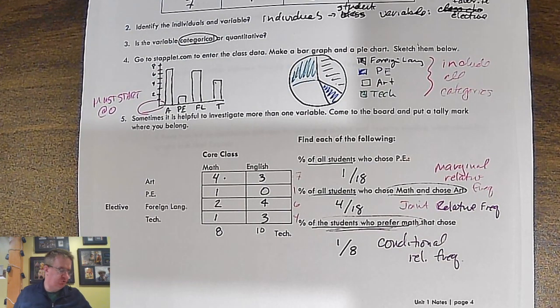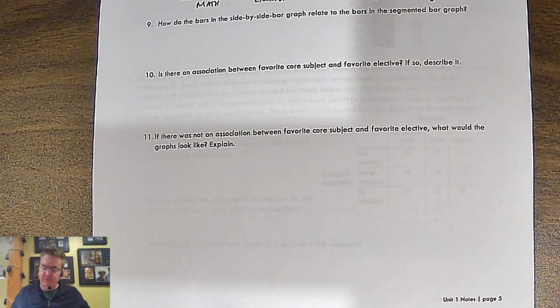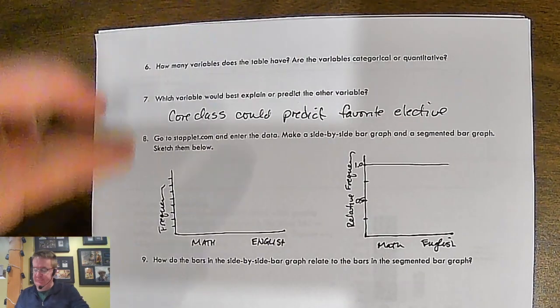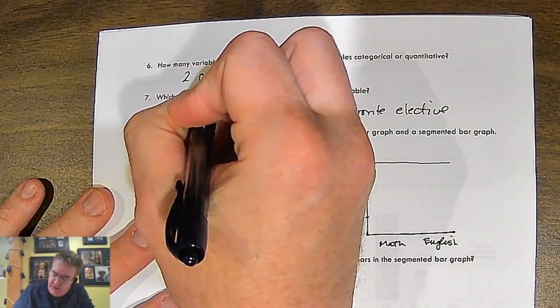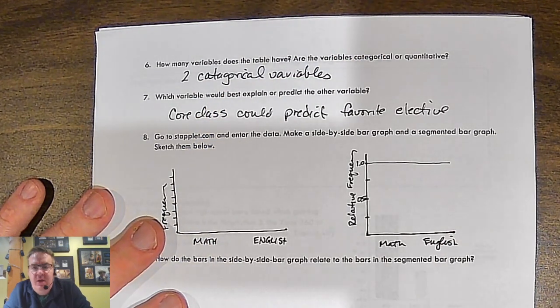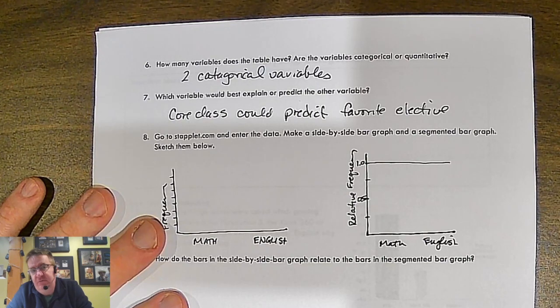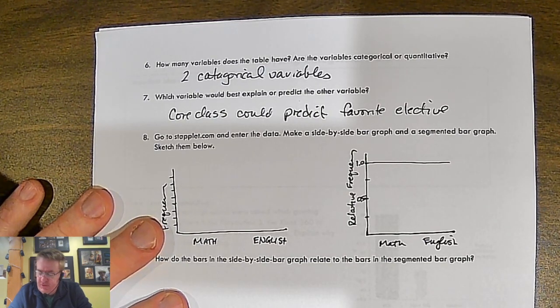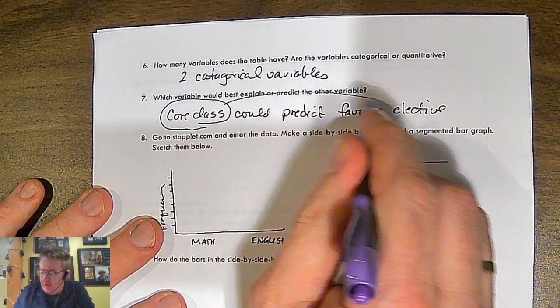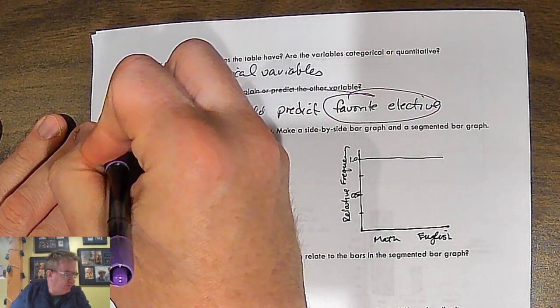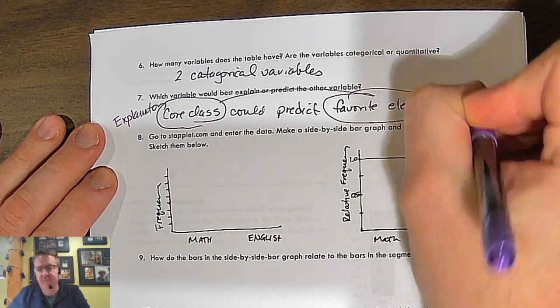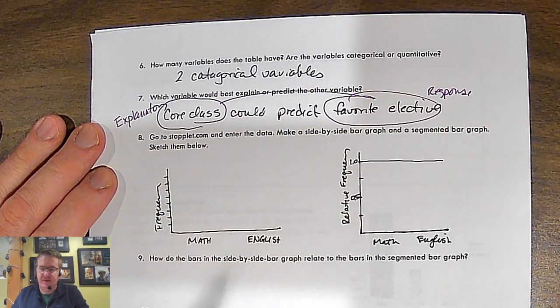Page two. How many variables do these things come up with? So we've got how many? How many variables does this table have? We have two categorical variables. Two categorical variables because both things that you're asking fall into categories. In terms of which variable could explain or predict the other value, you could probably make it both go either direction. But in this case here, most people would say, if you like math, you might like tech or things like that. The core class is predicting favorite elective. This is your explanatory variable. This is your response variable. This one's explaining that.